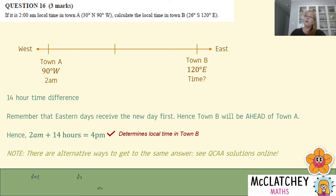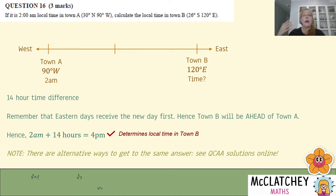There are alternative ways to get your answer — you could work backwards and do different things. If you jump onto the QCAA's website they've got some alternative ways of presenting this solution that you might want to have a look at. My way is not wrong — it's just a different way of getting there. In fact, the QCAA actually published two different ways to get there on their external exam papers and mine is one of them.